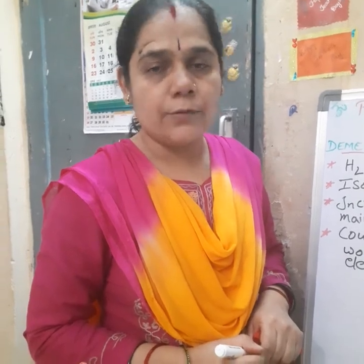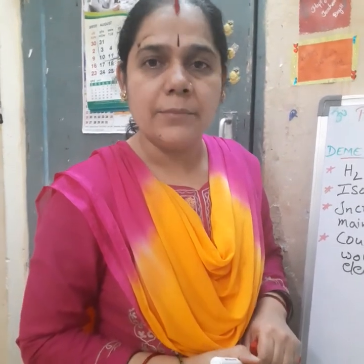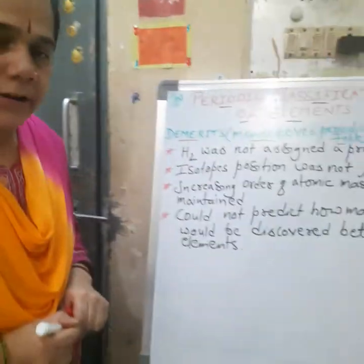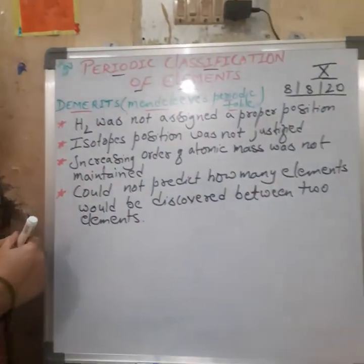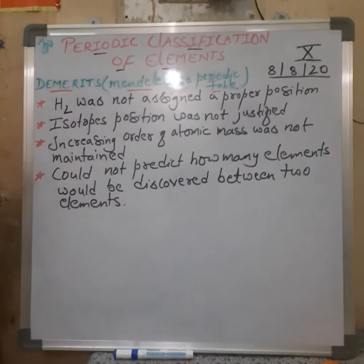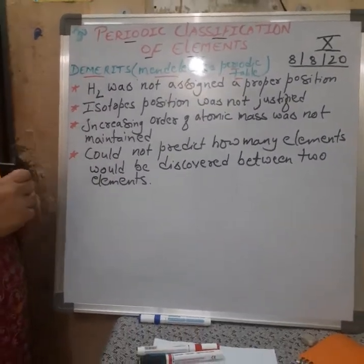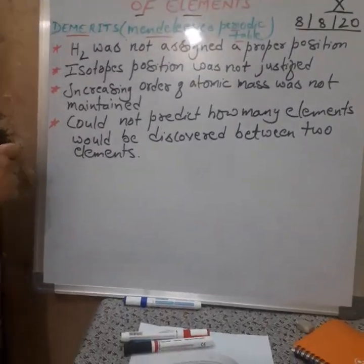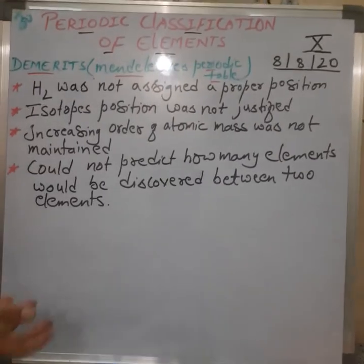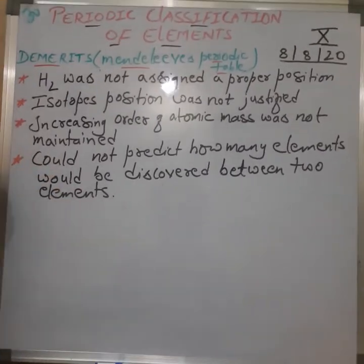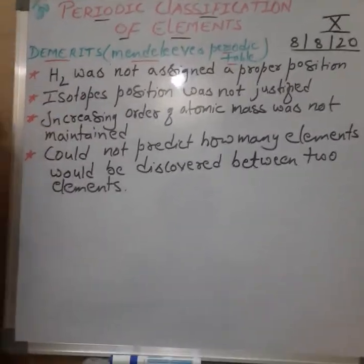Now let us focus on the demerits of Mendeleev's periodic table. There were four major drawbacks, which we can also call anomalies, limitations, or drawbacks of the Mendeleev's periodic table.